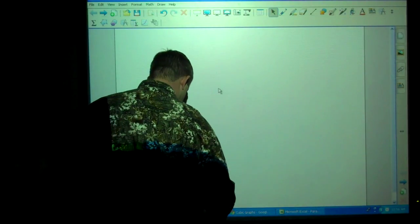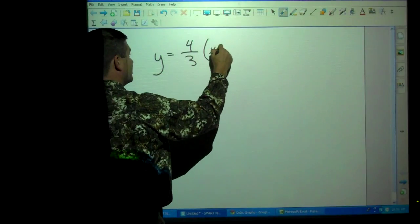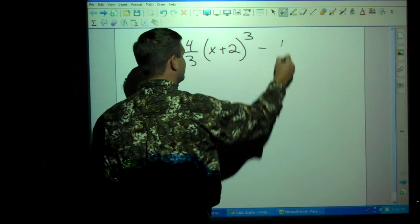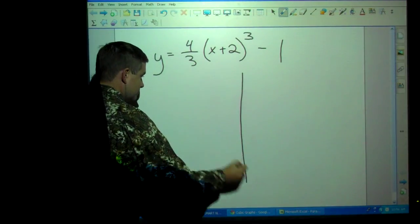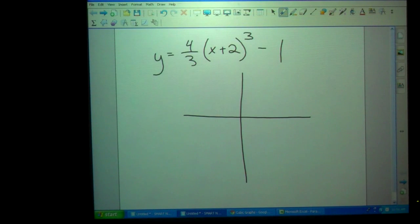Alright. So here we go. Y equals four-thirds x plus two cubed minus one. Now, if I had asked you when you walked in the door to graph this, could you have graphed it? Yes. No. Are you going to know it two weeks from now, how to graph it? Yes. Only if you study. Only if you study. If you go home and study. Every night. 30 minutes.